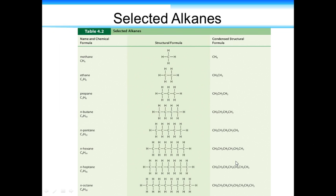These are the other alkanes you should be relatively familiar with in this chapter. We talked about propane in your outdoor barbecues, and butane as well. Anything with a prefix of 'but' has four carbons in it. The 'n' in front of the name just refers to the fact that all the carbons are in a straight line — one carbon, then another, then another, then another.